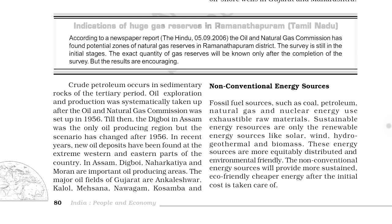Thorium deposits are found along the beach of the Tamil Nadu and Kerala coast. World's richest monazite deposits — Palakkad and Kollam — are in Kerala. If asked to write a short note on nuclear energy, there are six power stations: Tarapur is the oldest, established in 1969.